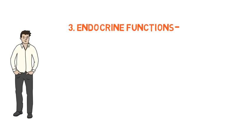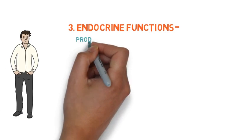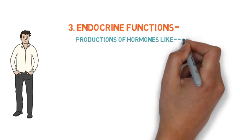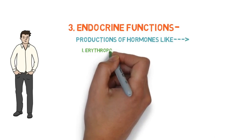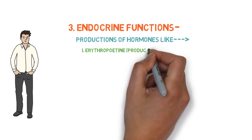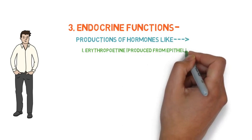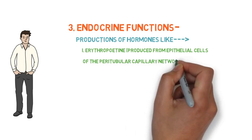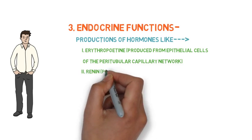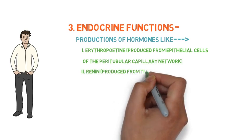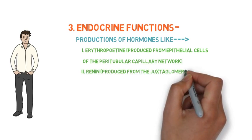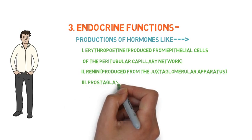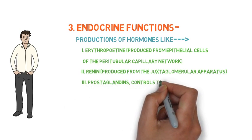Number three is endocrine function. The kidney plays an important role in the production of hormones like: number one, erythropoietin, produced from the epithelial cells of the peritubular capillary network; number two, renin, produced from the juxtaglomerular apparatus; and number three, prostaglandins, which help control blood pressure.